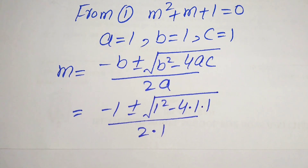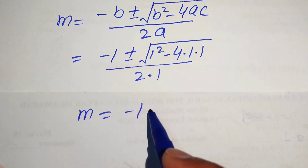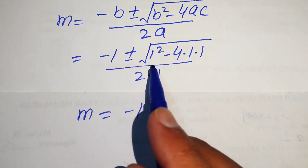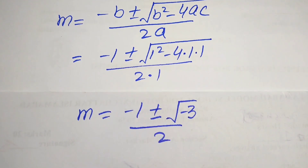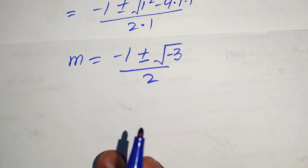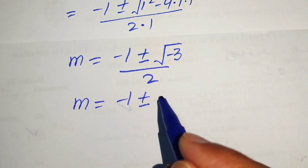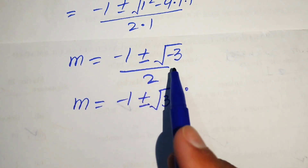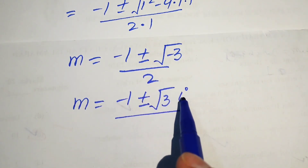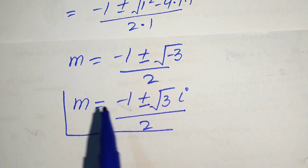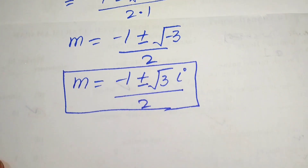Simplifying, 1 minus 4 equals minus 3, so we have m equals minus 1 plus or minus square root of minus 3, divided by 2. Since the negative sign is inside the square root, we convert it using i (iota), giving m equals minus 1 plus or minus square root of 3 times iota, divided by 2. These are two complex roots of the equation.